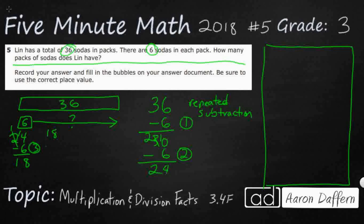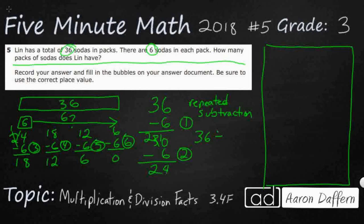Now I've got 5 packs and I still have 6 left, so I'm not done. I need to do 6 minus 6 — I've got nothing left. So I have a total of 6 packs. Repeated subtraction is another way to think of division. So when we did 36 divided by 6, we came up with 6 packs. We can check: does 6 times 6 make 36? Yes, it does. So my answer is 6.